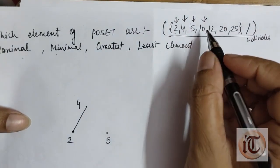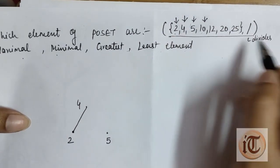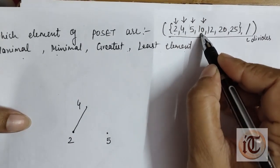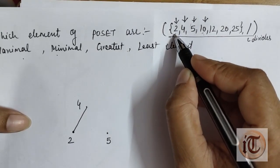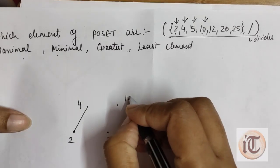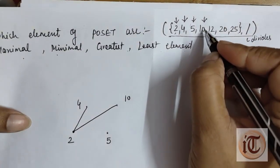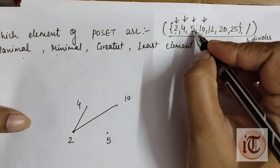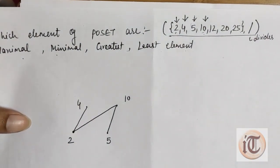The next element is 10. We compare it with all previous elements. Is 10 divisible by 2? Yes — so we make a direct connection between 10 and 2. Is 10 divisible by 4? No — so no connection between 4 and 10. Is 10 divisible by 5? Yes — so we connect element 10 with element 5.